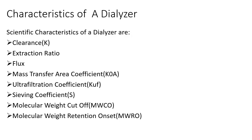If anyone asks about the characteristics of a dialyzer, I would say they are: clearance and extraction ratio, flux, mass transfer area coefficient, ultrafiltration coefficient, sieving coefficient, molecular weight cutoff, and last but not least, molecular weight retention onset.